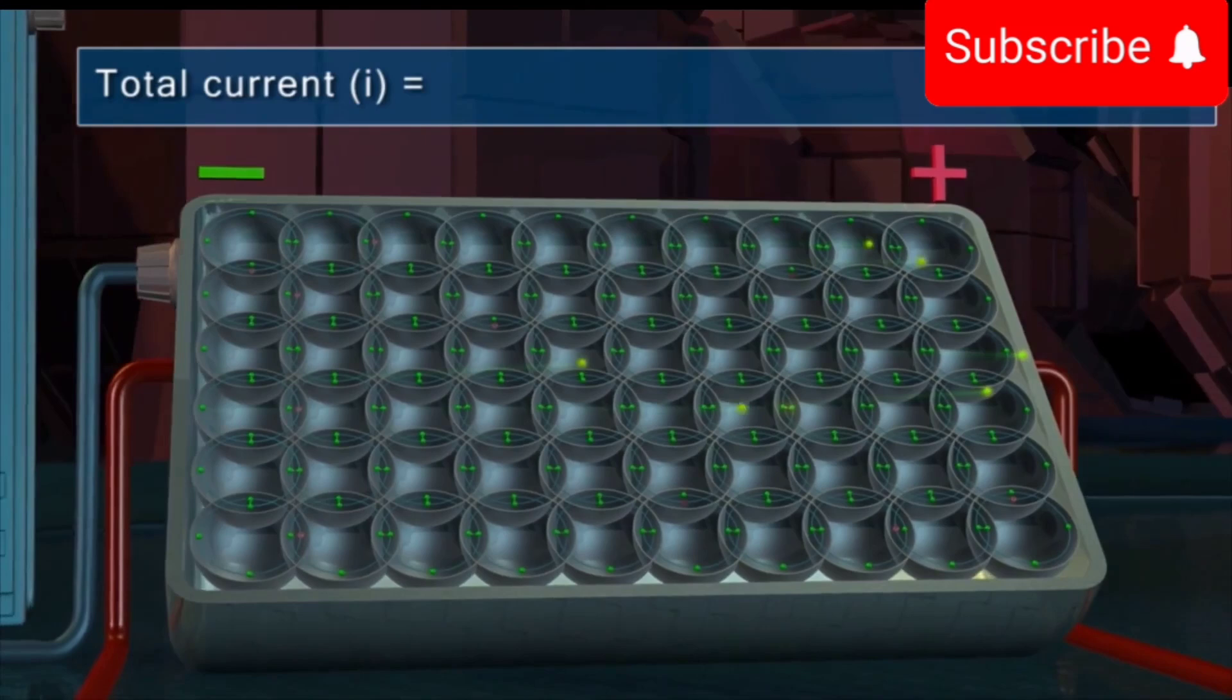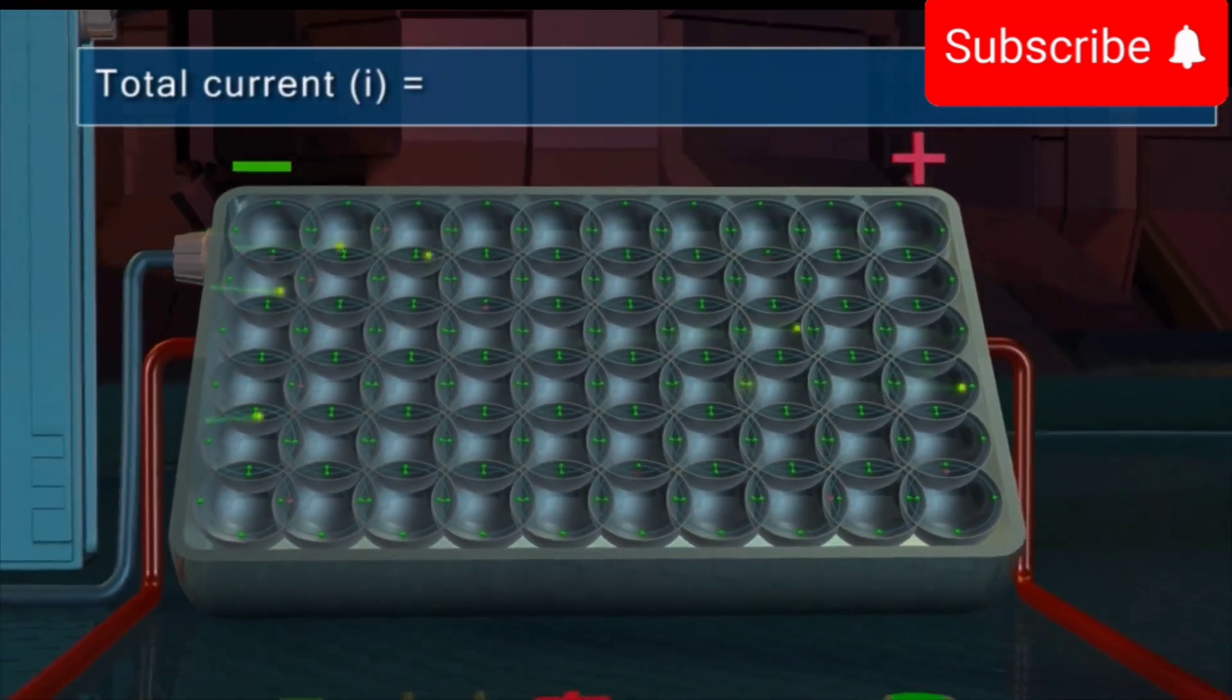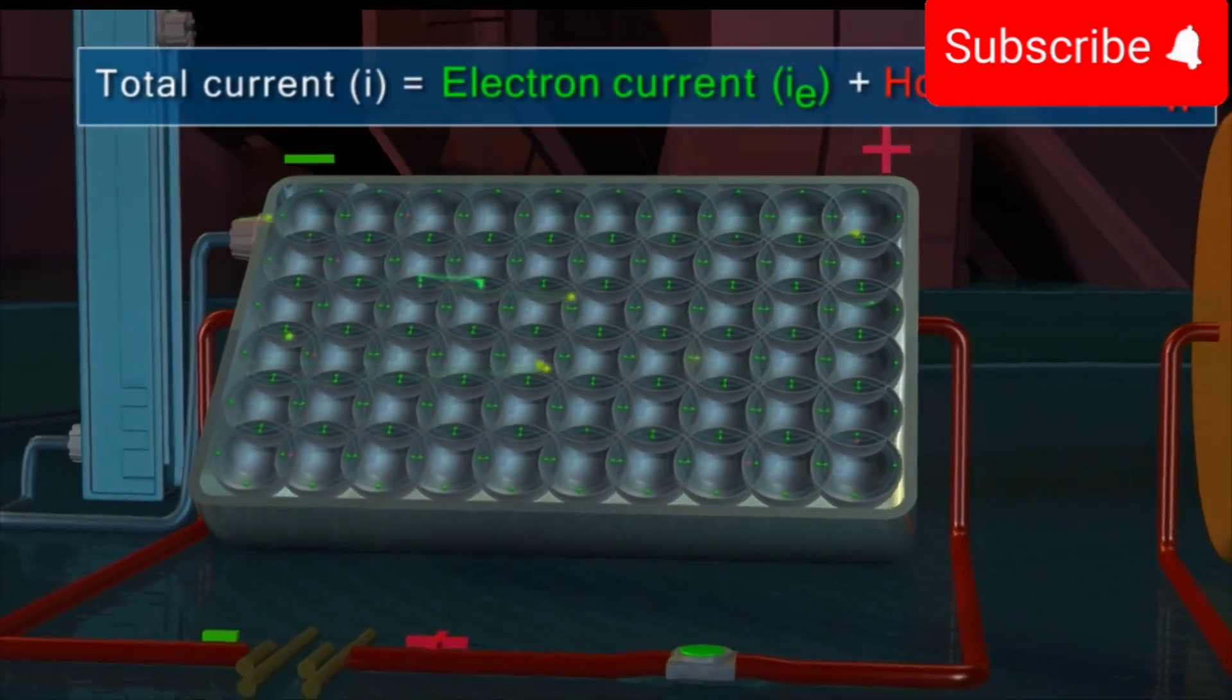Thus, total current (I) in an intrinsic semiconductor is due to both the electrons and the holes.